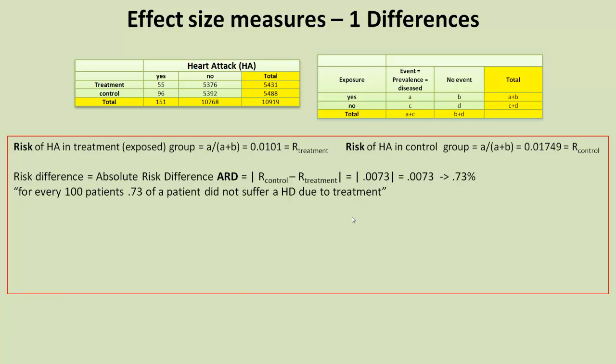What does that mean? Well, you can interpret that as, for every 100 patients, 0.73 of a patient did not suffer a heart attack due to the treatment. So, treatment saved 0.73 of a patient gets a heart attack. Well, if it's a strange way of putting it, there is a better way.